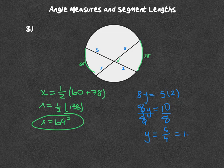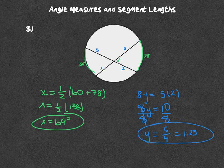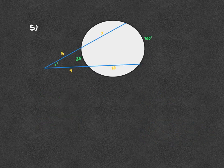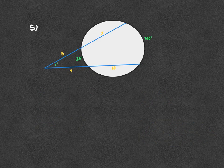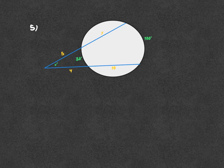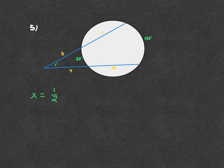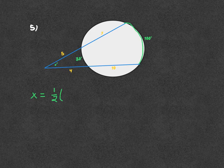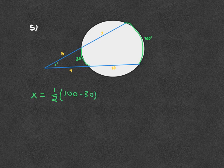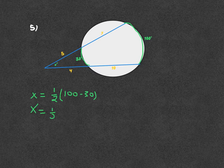This next example, the two secant lines are intersecting outside the circle. When I'm finding X, my angle is going to equal half of the difference of the intercepted arcs. So the difference of the big one, 100, minus the small one, 30. X equals one half, 100 minus 30 is 70. X is equal to half of 70, which is 35 degrees.